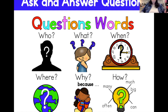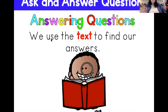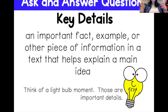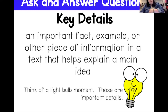Those are common question words you may use when asking questions. To answer questions, we use the text to find our answer, and we look for key details. Key details are important facts, examples, or other pieces of information in a text that help explain the main idea or help us answer questions. Think of a light bulb moment — those important thoughts are your key details. Now let's look at an example.